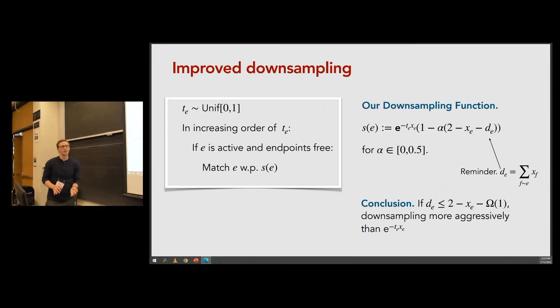That's the main idea of our work. Our new downsampling function basically starts with the same e^(-t_e * x_e), which achieves this 0.43 and multiplies it by a factor 1 minus alpha times (2 - x_e - d_e). Alpha is some parameter we optimize over at the end of our analysis. But the main conclusion from this downsampling function is to notice that if d_e is small, particularly significantly less than 2 minus x_e, we're downsampling more aggressively.